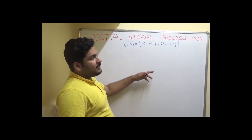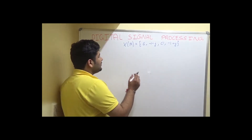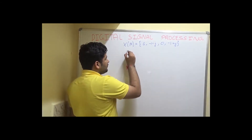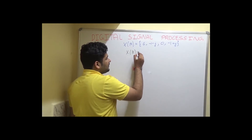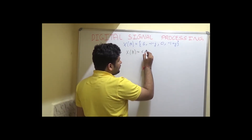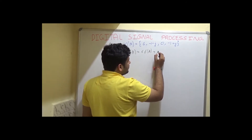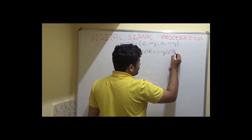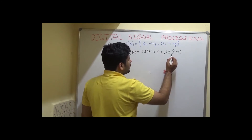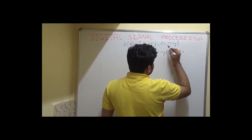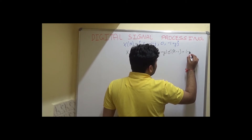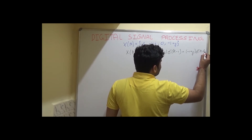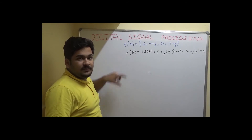Before we apply the IDFT formula, let us see how to convert the given spectrum into the form of an equation. X(k) can be written as 6 times delta(k) plus (minus 1 minus j) times delta(k minus 1) plus 0, plus (minus 1 plus j) times delta(k minus 3). This is how to convert the given spectrum into the equation.